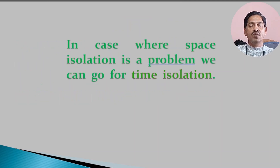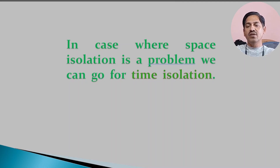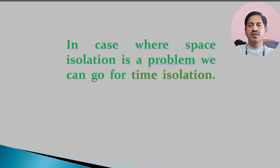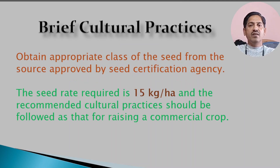In cases where space isolation is a problem, we can use time isolation — adjusting planting time so that the flowering of your crop does not coincide with surrounding crops, thus avoiding contamination. The cultural practices for hybrid seed production are the same as for open pollinated varieties. The required seed rate and other cultural practices must be applied to raise a good and healthy crop.